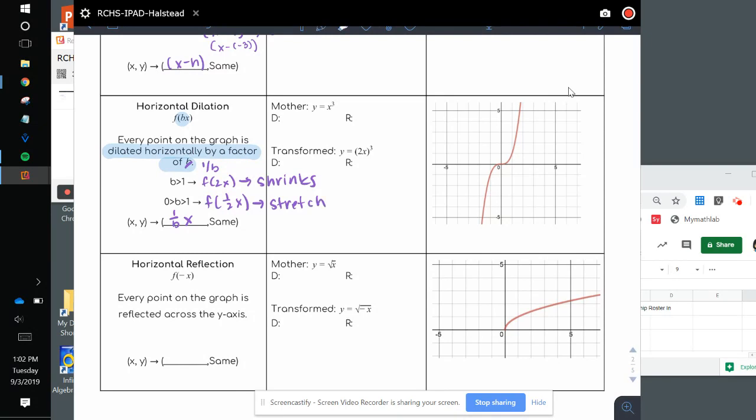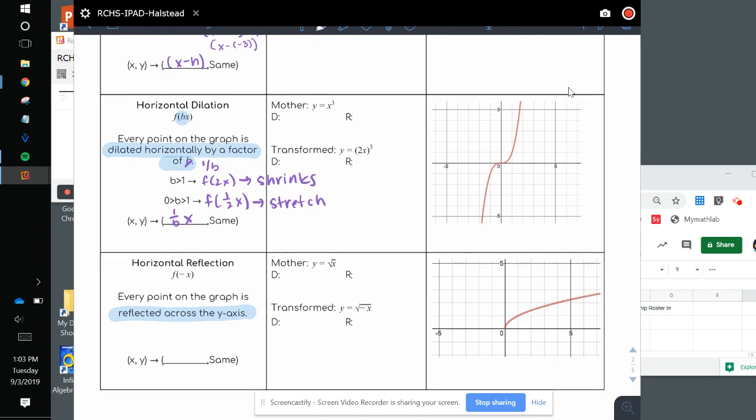All right, last one, and then we're going to go through the examples, is f of negative x. This is also a reflection, but it's when the x's are negative. We're changing our x's from positive to negative, so it reflects over the y-axis. We get negative x, and the y's stay the same. Okay, let's go back to the top.